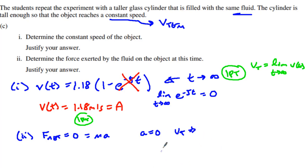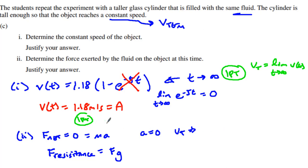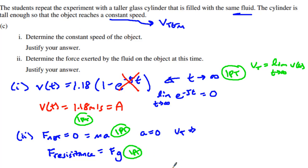As we hit terminal velocity, the acceleration is equal to 0, which means the force of resistance of the fluid must be equal and opposite to the force of gravity. That is worth two points.